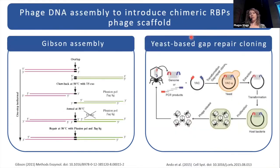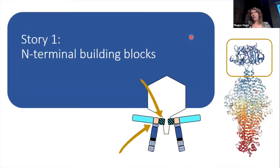To insert this chimeric RBP into the phage at the DNA level, we used one of two DNA assembly methods: either Gibson assembly, which is enzyme-based, or gap repair cloning using yeast cells. Let me now tell two stories.